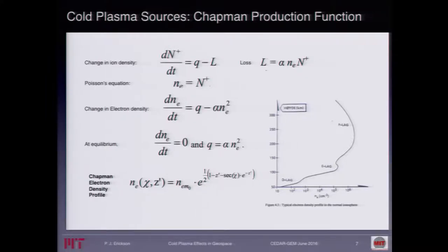So here's the ionospheric profile of some cold plasma. Those of you with good eyes will notice I picked an altitude profile that is in Norwegian — thank you to my Norwegian friends. What you get is that there's a peak in something called the F region, then a secondary peak at daytime in the E region, and then the D region where things get complicated and a lot of the neutral chemistry takes over.